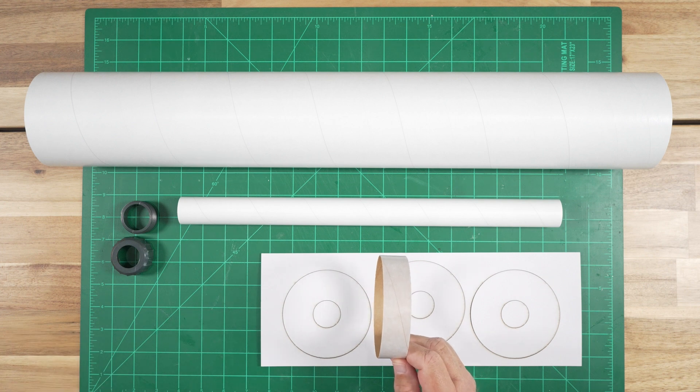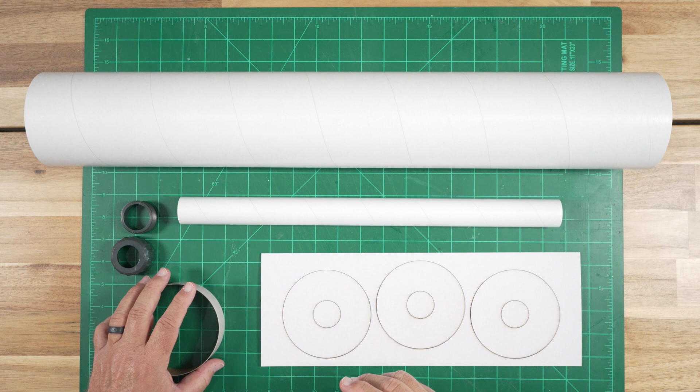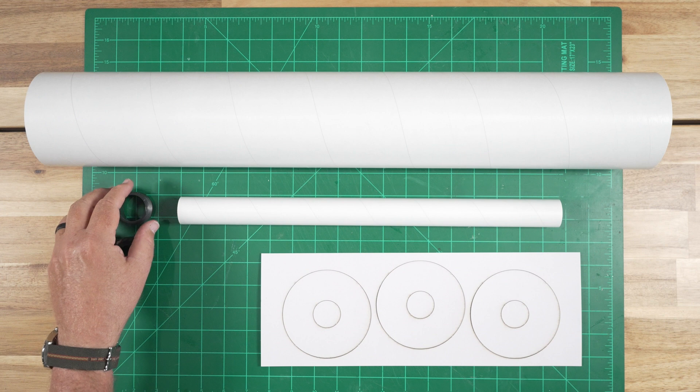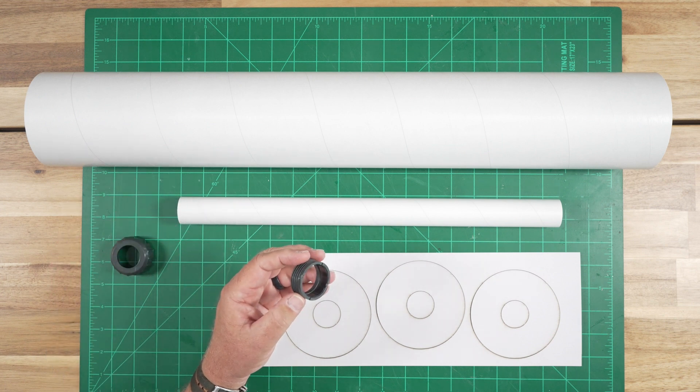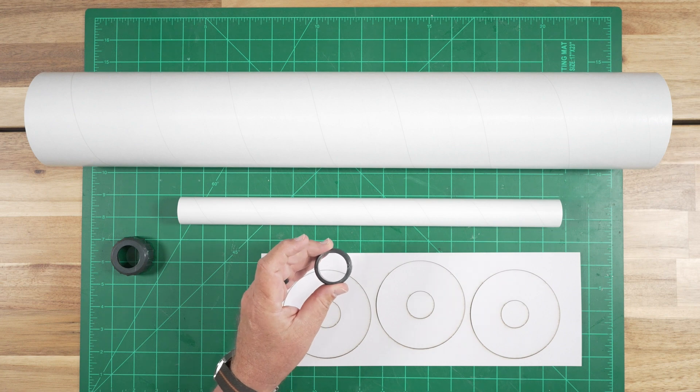The shorter tube will be inserted into the aft end of the airframe once we've completed assembly and will become a stiffening ring, a reinforcement. Although it's called out in the directions, we will not be installing the motor mount retaining ring yet. We're going to save that for later in the build.